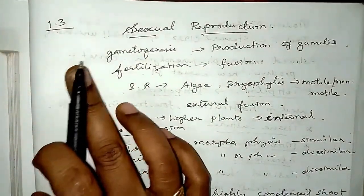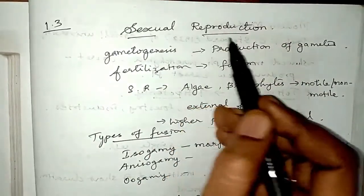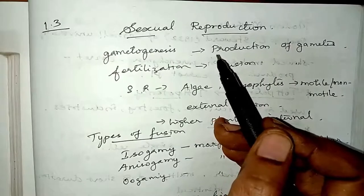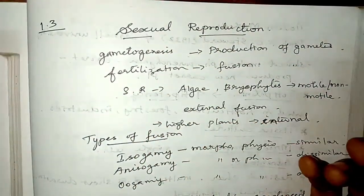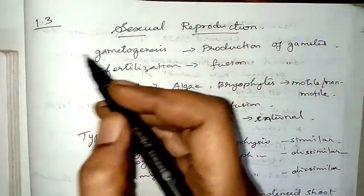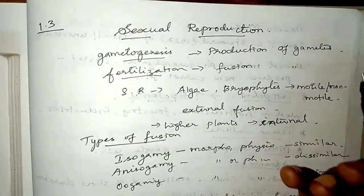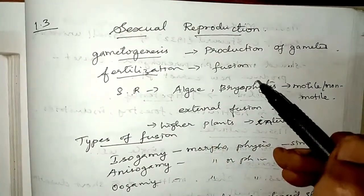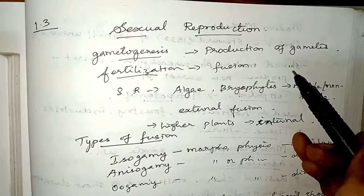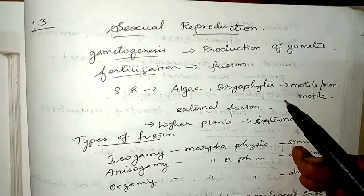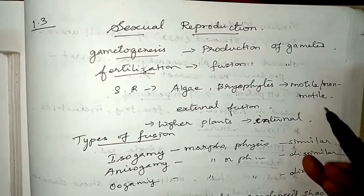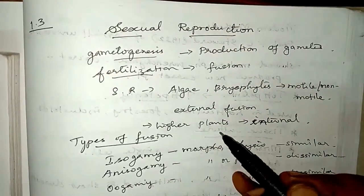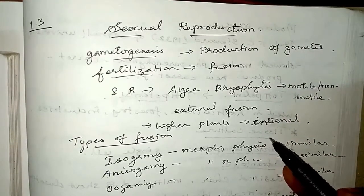Welcome to lesson 1.3: Sexual Reproduction in Plants. In the previous classes we learned about reproduction in lower plants like algae and bryophytes. Today we shall deal with sexual reproduction in them. Sexual reproduction involves two important processes: gametogenesis and fertilization. Gametogenesis is the production of gametes by the individual plant. Fertilization is the fusion of these gametes to form the embryo. In lower plants like algae and bryophytes, gametes are either motile or non-motile and their fusion takes place externally, outside the body of the plant, whereas in higher plants the fusion takes place internally.